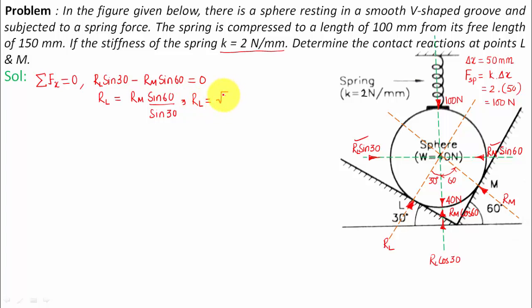R_L can be written as R_M times sin 60 over sin 30. On putting this value in a calculator, sin 60 by sin 30 is equal to root 3 times R_M. So this is going to be my first equation and I'm going to be using this equation somewhere because I need the value of R_L as well as R_M.